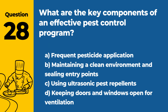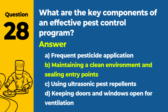Question 28: What are the key components of an effective pest control program? a. Frequent pesticide application. b. Maintaining a clean environment and sealing entry points. c. Using ultrasonic pest repellents. d. Keeping doors and windows open for ventilation. Answer: b. An effective pest control program involves maintaining a clean environment, properly storing food, and sealing potential entry points to prevent pests from accessing food and shelter.